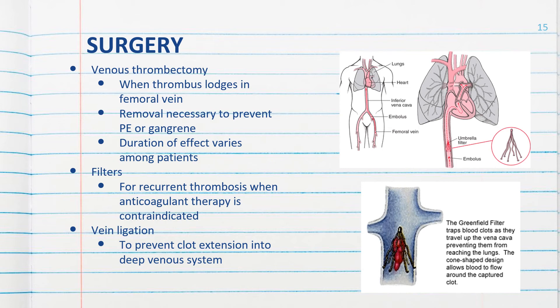Superficial thrombophlebitis of the great saphenous vein can progress to DVT. It may be treated by ligating and dividing the vein where it joins the femoral vein to prevent the clot from extending into the deep venous system. Superficial thrombophlebitis involving infection can lead to septic venous thrombosis, in which case the affected vein is excised to control infection, and antibiotic therapy would be initiated.